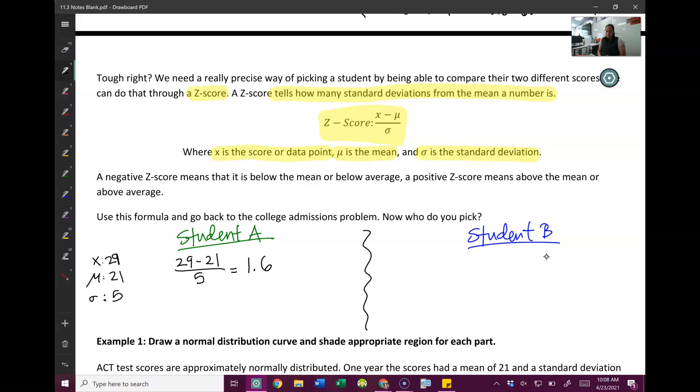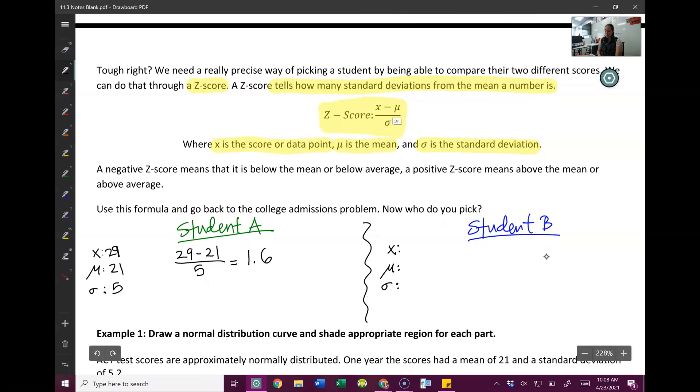I want you to try student B. So we'll go back in the problem, list what they are, plug it into the equation. And by the way, just so you know, the equation is very picky. It's always data point minus mean, not mean minus data point. That is different. Don't do that. So pause the video, plug all that in and see how many standard deviations above the mean student B got. And then we can come back together and compare them.